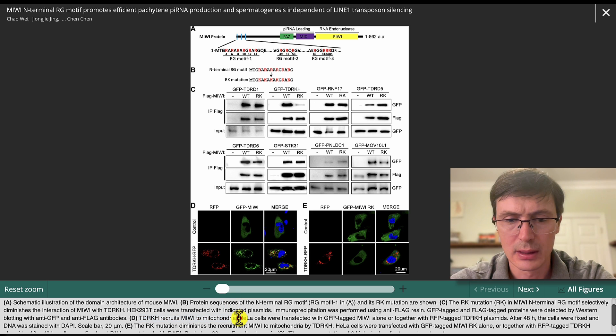And then here, they move to the materials and methods. And I think probably I would have started with just saying like immunofluorescence of HeLa cells transfected with GFP MIUI alone or GFP tagged or with RFP tagged TDRK plasmid. So again, I think that I would explicitly say, okay, this is an IF micrograph generated in so-and-so way, rather than directly describing the materials and methods.